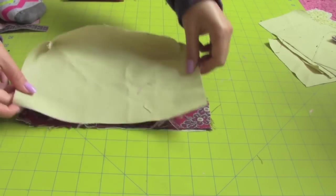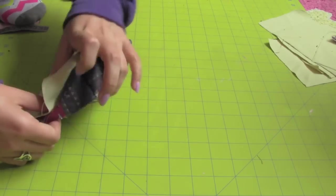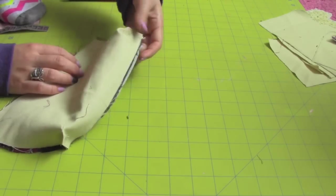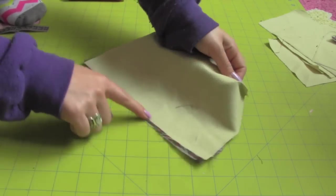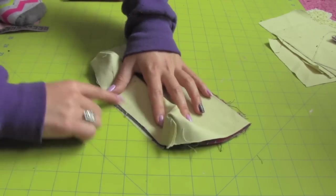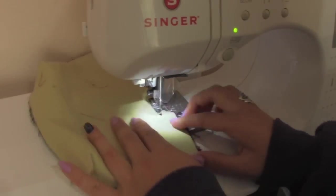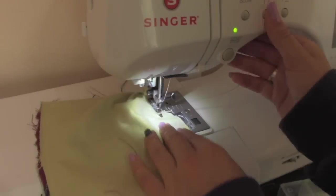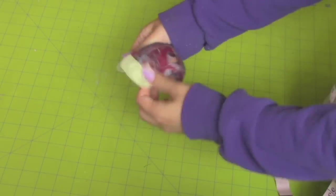Take the two pieces and place them right sides together and sew along the edges leaving an opening to flip it inside out. Now flip it inside out.